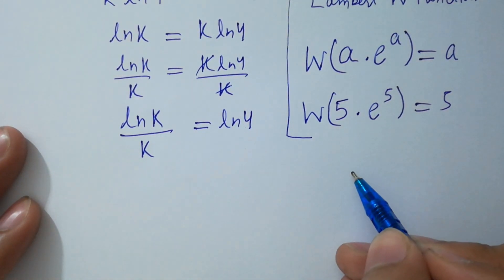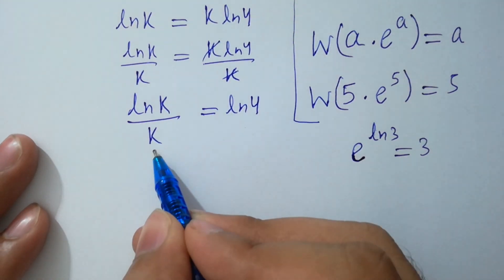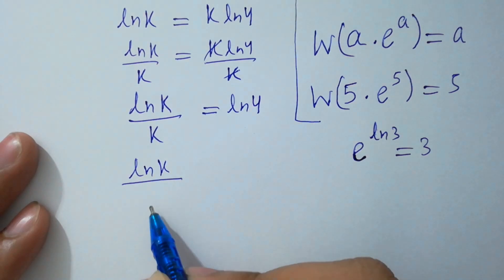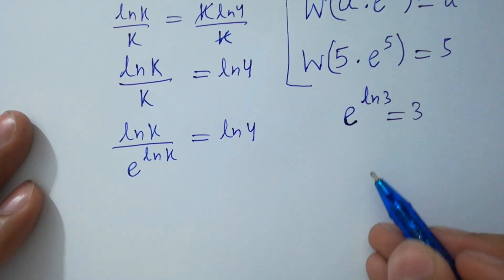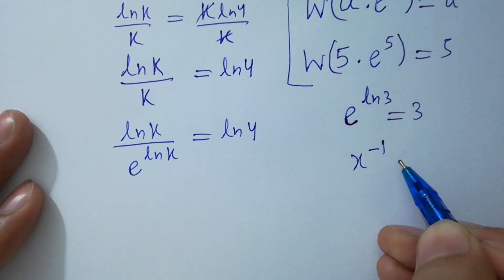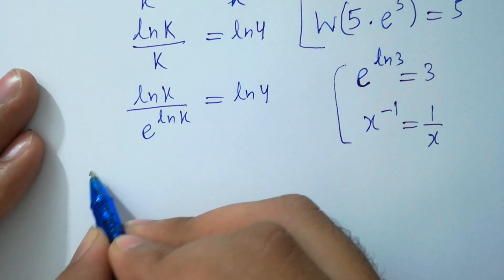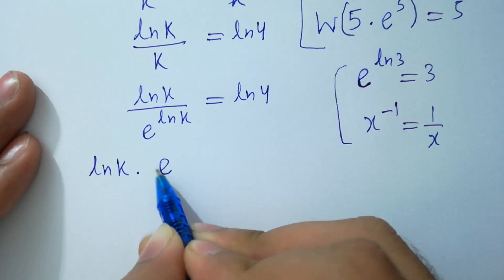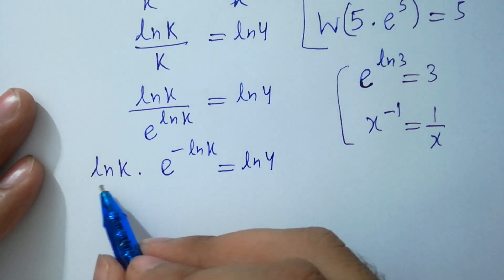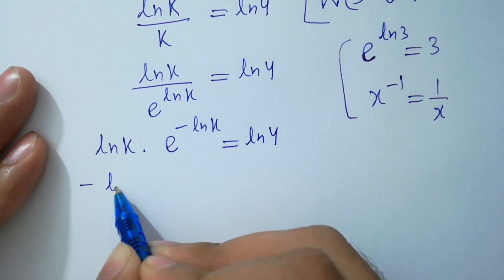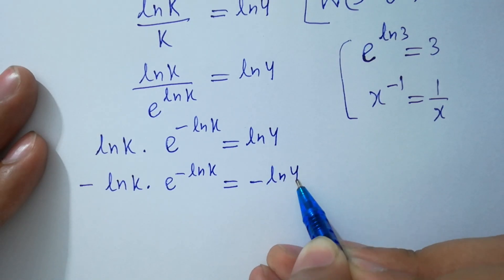Since e to the power natural log k equals k, so here k will be equal to e to the power ln k. Therefore ln k over k becomes ln k times e to the power minus ln k equal to ln 4. Since x to the power minus 1 equals 1 over x, we can write ln k times e to the power minus ln k equals ln 4. Now multiply by minus on both sides: minus ln k times e to the power minus ln k equals minus ln 4.